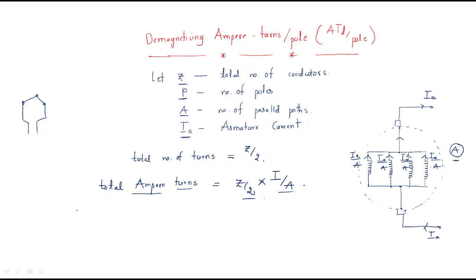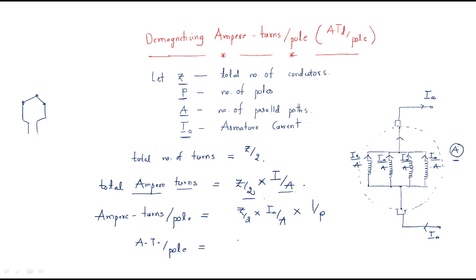From the total ampere turns, we can find the ampere turns per pole by dividing by the number of poles P. So the ampere turns per pole formula is: Z × Ia / (2 × a × P). This represents the total ampere turns per pole for the DC machine.